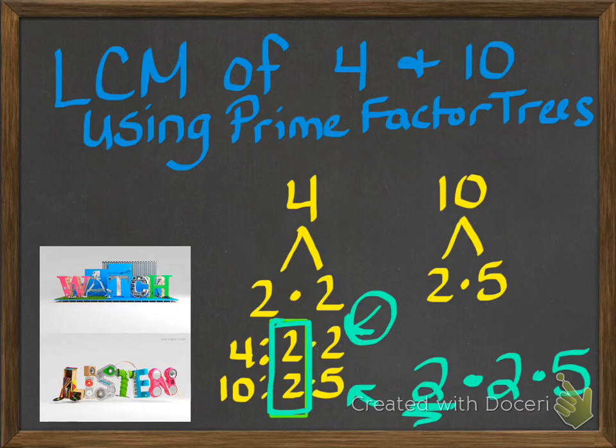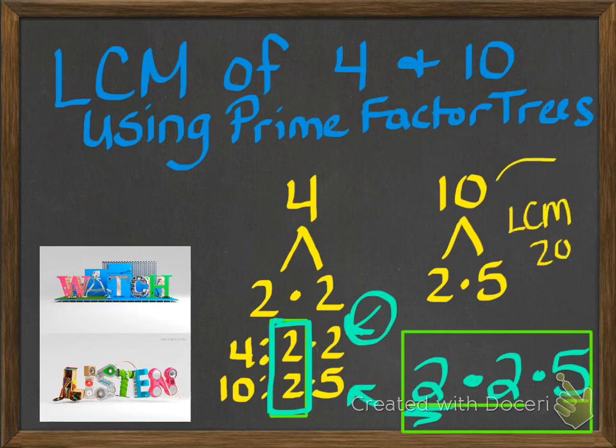Now I'm going to multiply what I see over in this area here. 2 times 2 gives me 4, times 5 gives me 20. So the LCM for this example is 20.